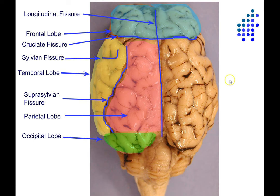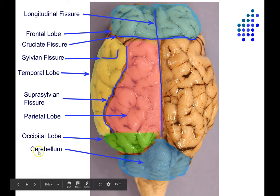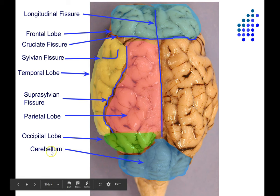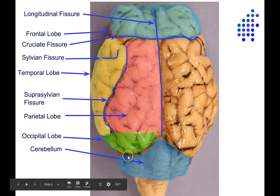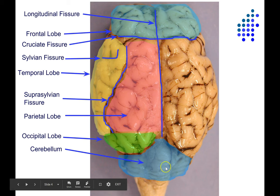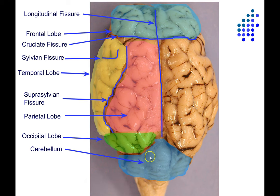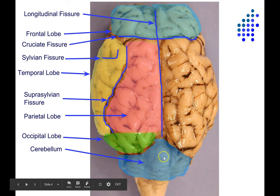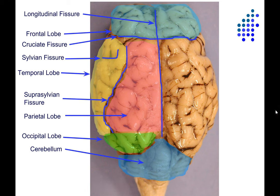Just caudal or posterior to the cerebrum is the cerebellum. Cerebellum is a diminutive form — like the suffix -ita in Spanish, meaning 'little.' In Latin, the cerebellum is the little cerebrum. It really is in some ways like a miniature cerebrum: it's got a cortex, a thin layer of gray matter, many more folds than the cerebral cortex, and white matter underneath the cortex with subcortical nuclei below that. We'll talk more about its function later.